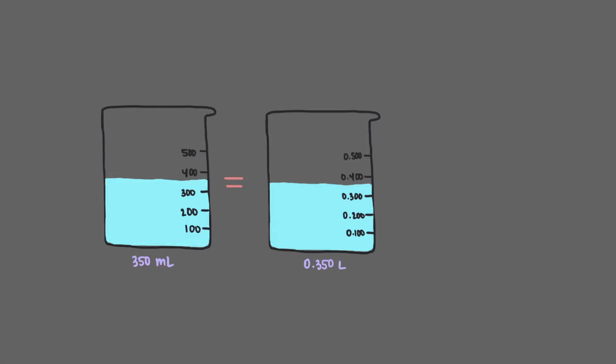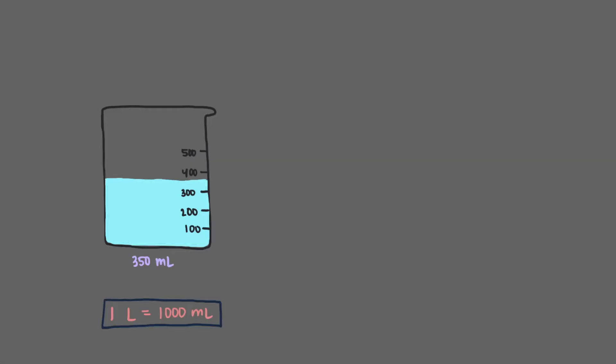Let's investigate. We can prove to ourselves that 350 milliliters and 0.350 liters are the same volume pretty easily. One liter of something is equivalent to 1000 milliliters of that something. These are two different ways to describe the same thing. In other words, one liter equals 1000 milliliters. In this beaker, we have 350 milliliters. Let's determine its volume in liters using what we know about the relationship between milliliters and liters.